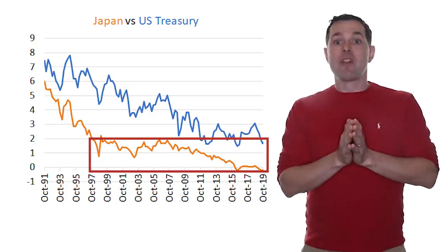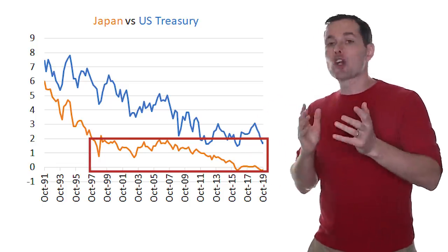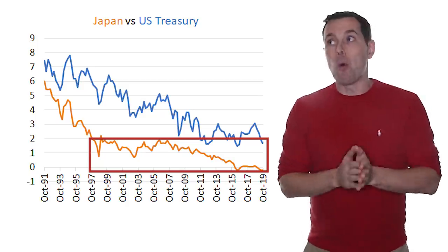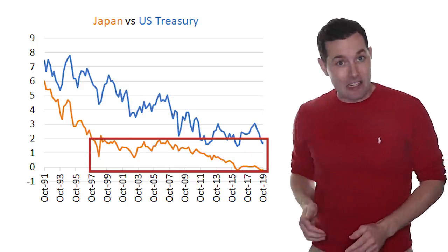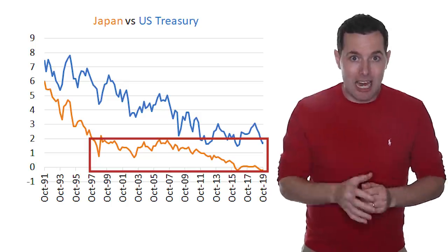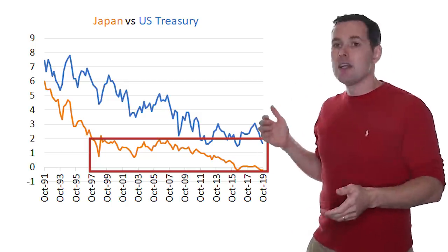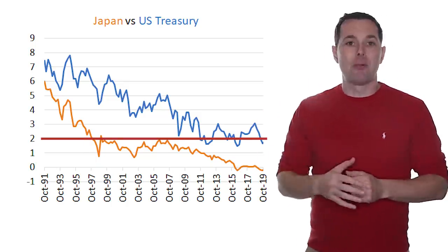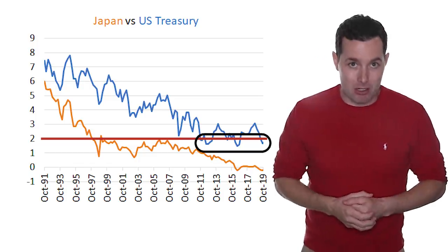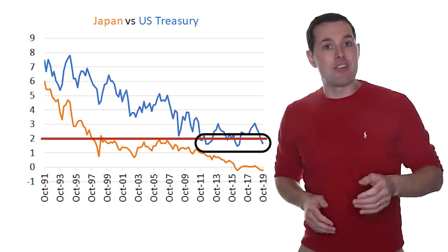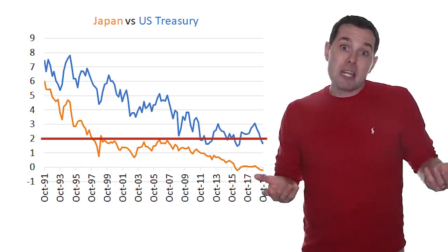So this raises the question: if rates are going to rise, when are they going to rise? Japan has been able to stay there for a long, long time. The U.S. just recently, just over the past few years, crossed below the 2 percent mark. So when does it begin to rise? Is it five years from now, ten years, twenty years? It could be.